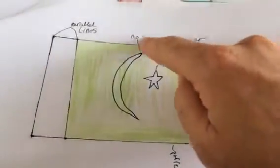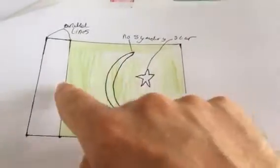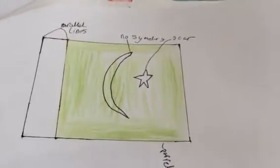Again, a flag with a crescent and a star, but because of the crescent and the star there is no line of symmetry in that picture.